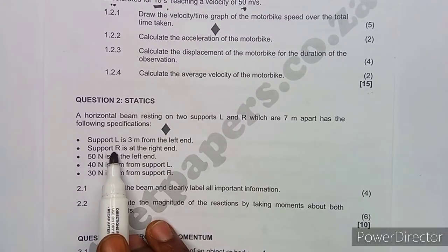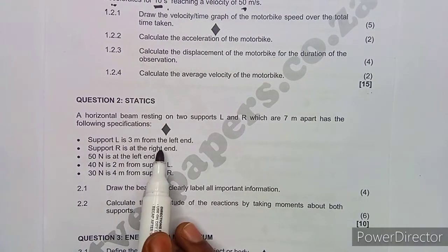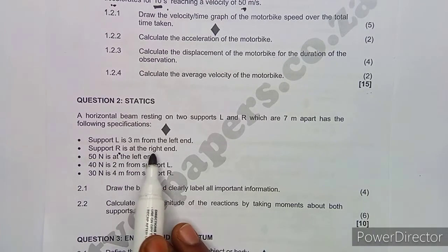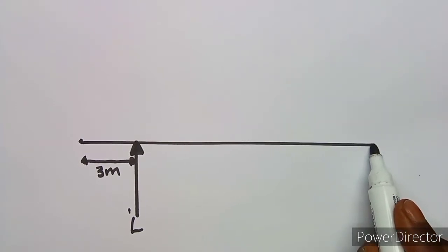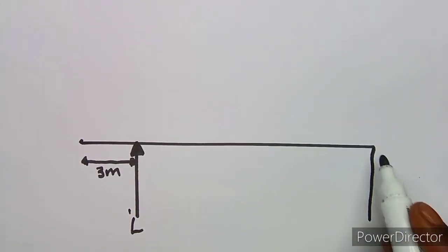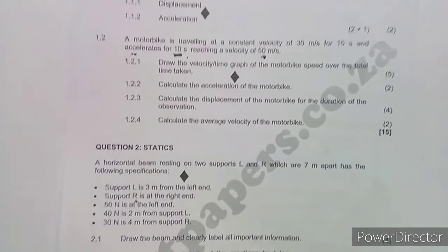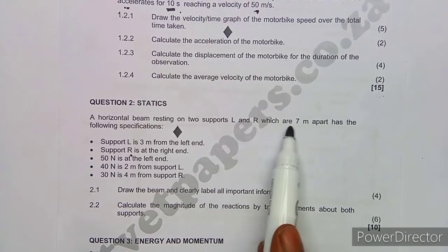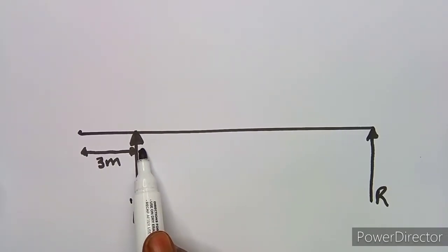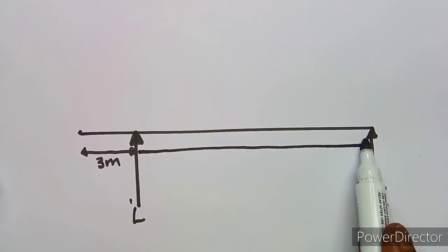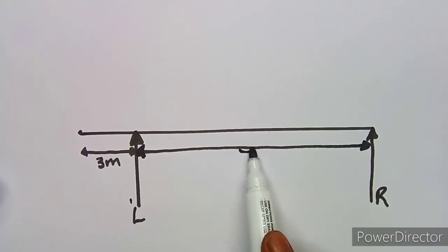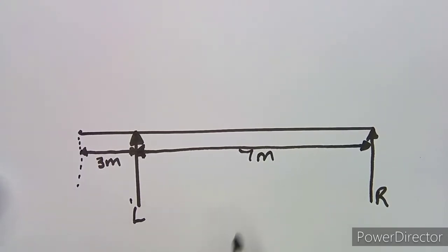Support R is at the right end, so there's another support placed straight at the right end of the beam. Between support L and support R there is a distance of seven meters, which we indicate. This means the total beam length is ten meters — three meters from the left end to L, plus seven meters from L to R.